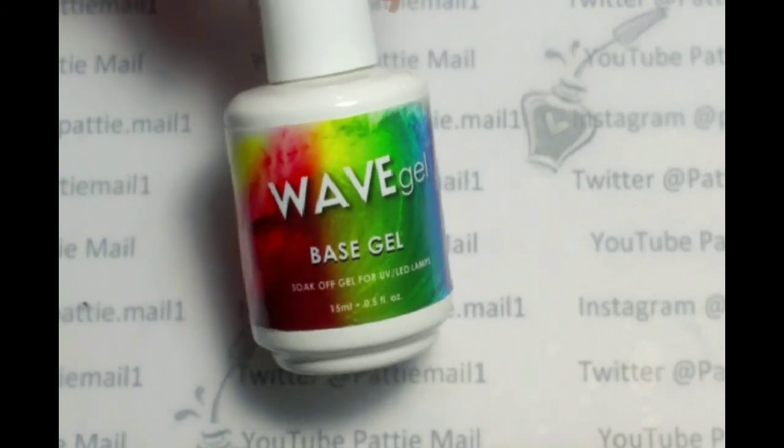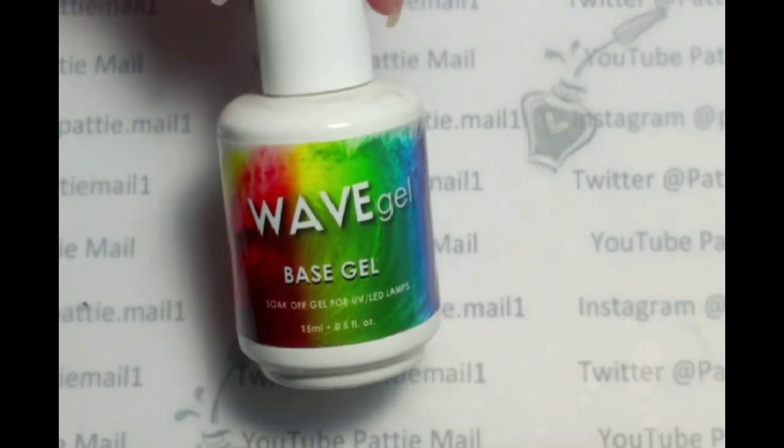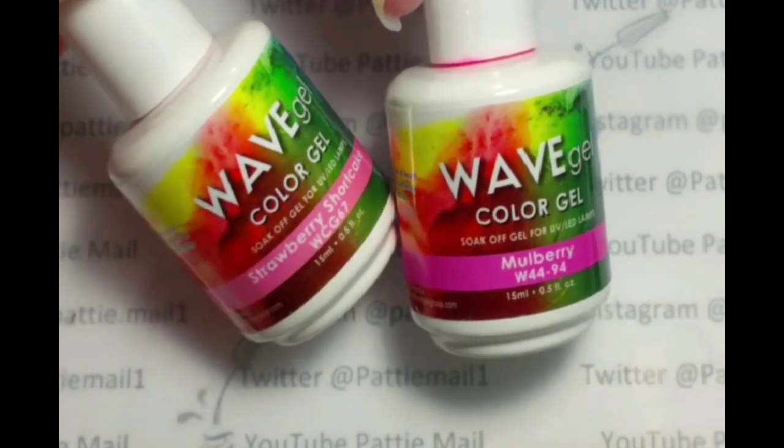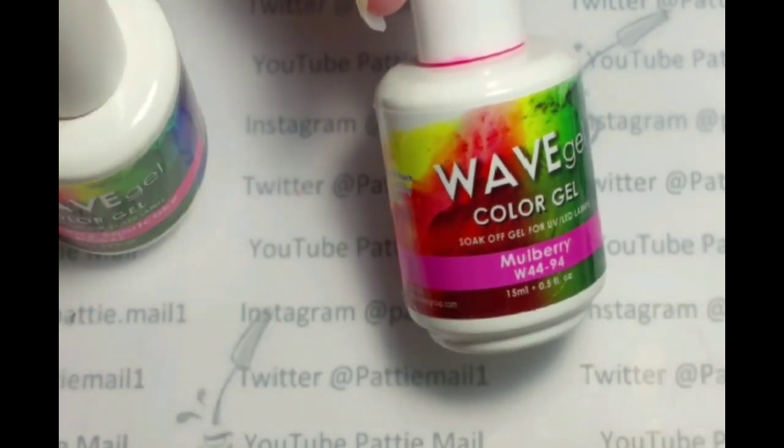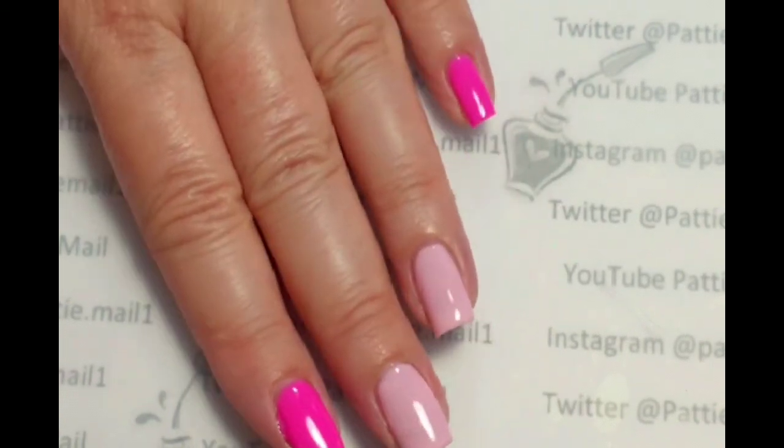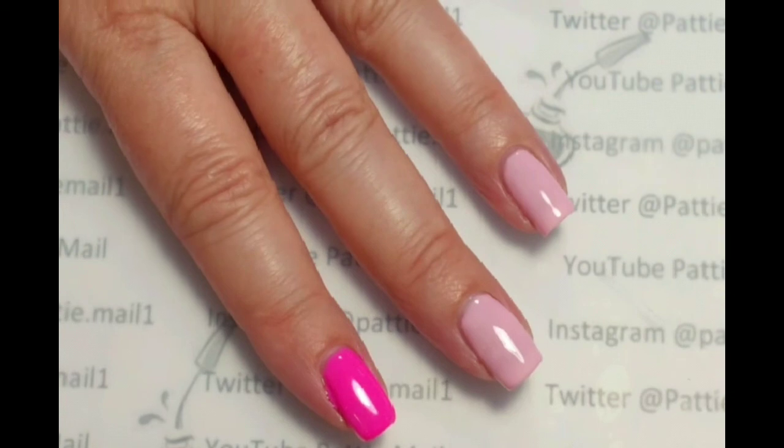First I'll be using Wave Gel's base coat. Now I'm going to use Mulberry and Strawberry Shortcake. Okay. So I have two coats of each and now I'll be adding the flowers.